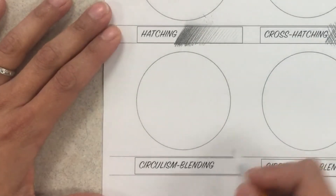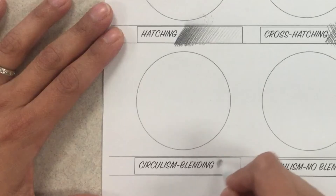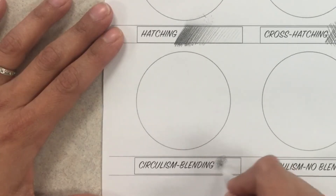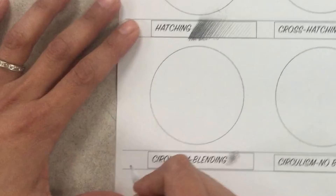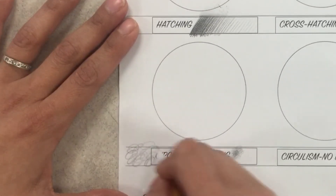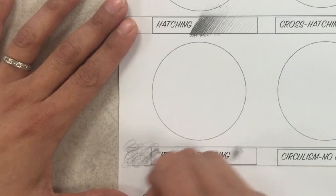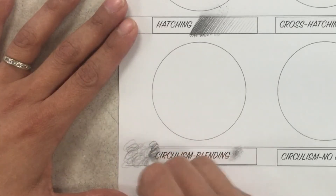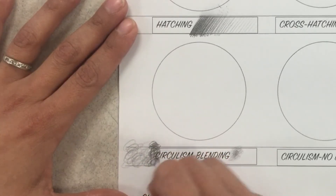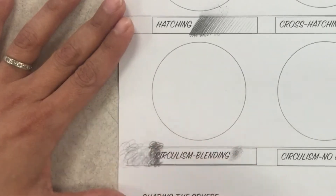Circularism is when you're going in small little circles. You can show the texture of the circles — I'll show the texture on this side. The more circles I do, the darker it will go, and I can also increase the pressure and do more to make it darker or lighter.